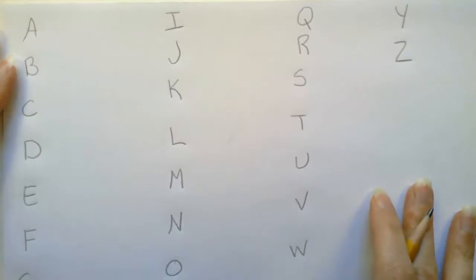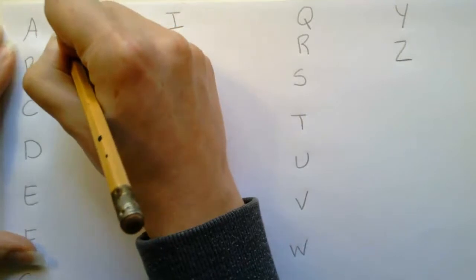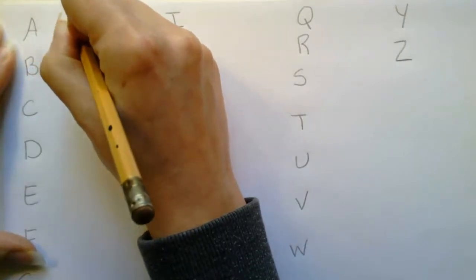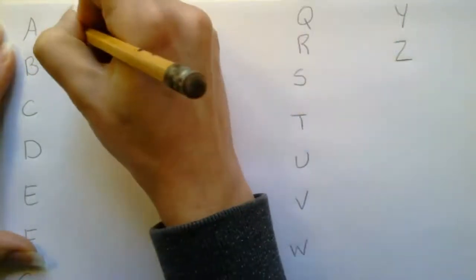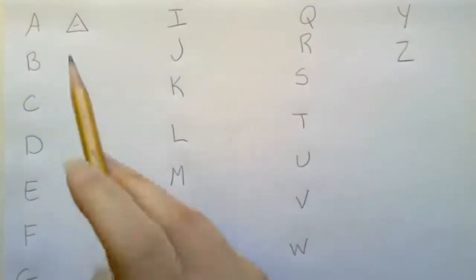As I was thinking about this, I looked at the letter A and thought about how can I represent this with a symbol other than the letter A. The first thing that came to my mind: the letter A kind of looks like a triangle.